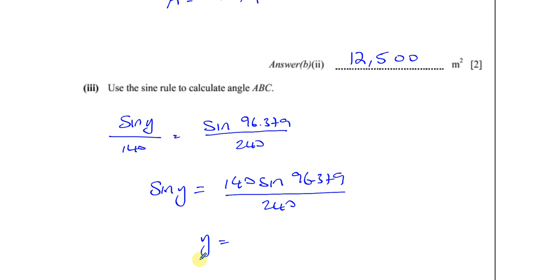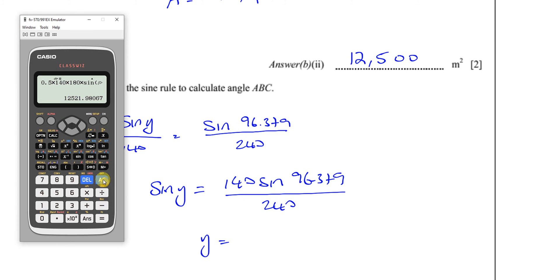So I take this here. So I say inverse sine. Put my fraction. I have 140 times the sine. And I'll write this in this more accurate form. 97.379 over 240. And that should give us our answer. Just to make sure I didn't mess up there. Yep. That's right. 140 times the sine of 96.379 over 240. Inverse sine. Degree mode. Press equals.